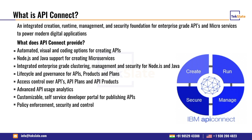IBM API Connect is a gateway product that helps proxy services. You can also create APIs inside it — REST APIs, SOAP APIs, or proxied APIs. One key benefit is speed: you can create and implement APIs very quickly in just a few steps.